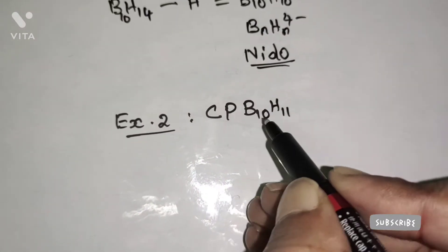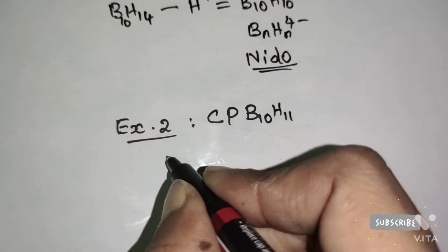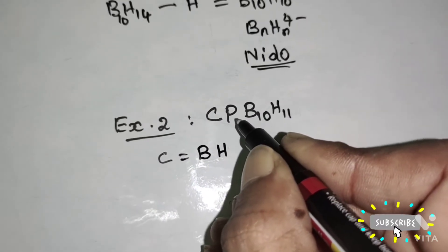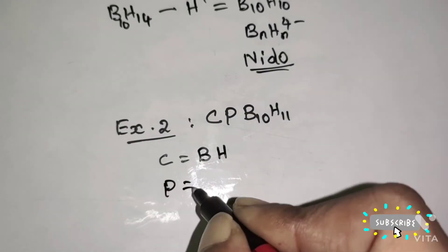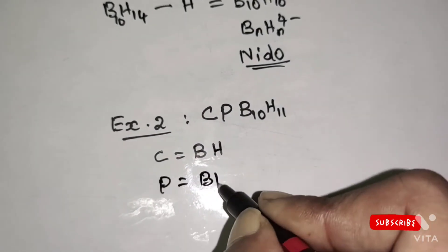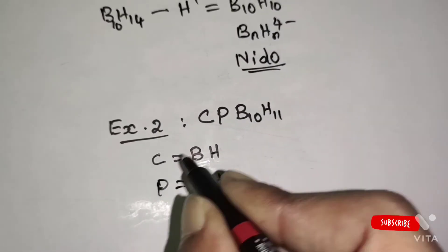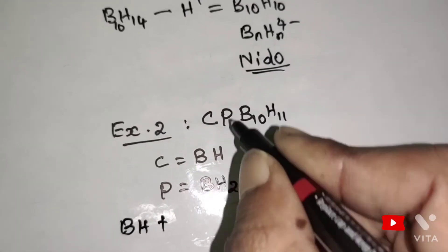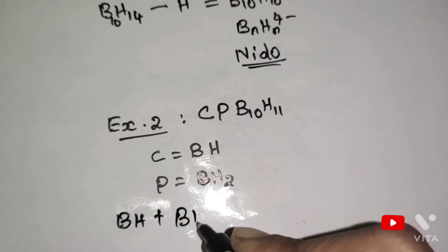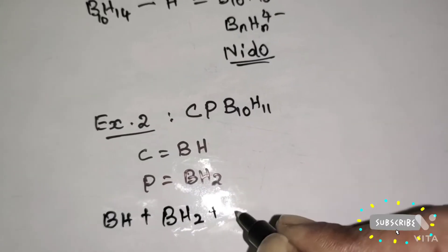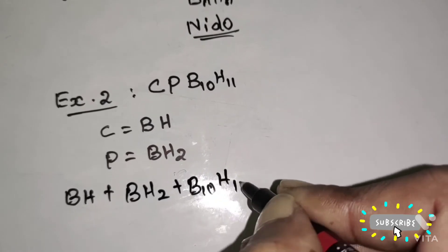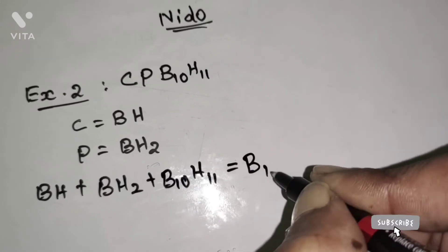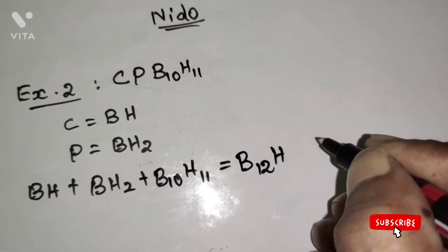Example 2: CPB10H11. Carbon is isoelectronic with BH. Phosphorus is a group 15 element; therefore, phosphorus is isoelectronic with the BH2 unit. So carbon equals BH, and phosphorus equals BH2. Therefore, BH + BH2 + B10H11 gives a total of B12H14.